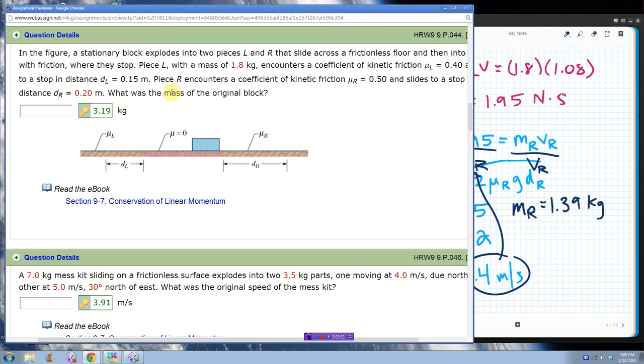So the mass of the original block should be the two pieces added up. So 1.39 plus 1.8. Should be 3.19. Yep. 3.19 kilograms. So we are good.